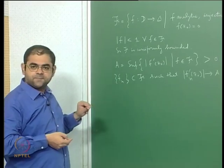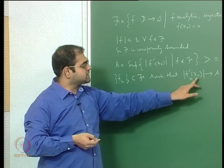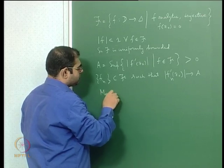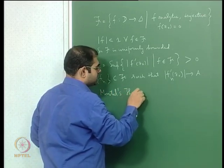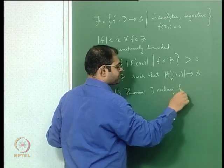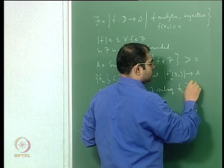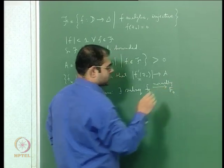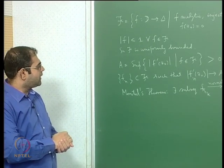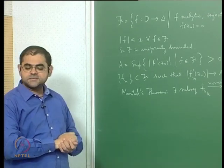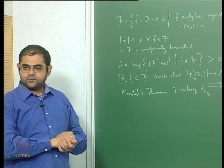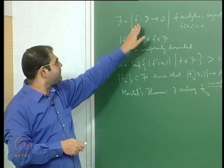We pick a sequence {fₙ} in the family F such that |fₙ'(z₀)| converges to a. This is possible because a is a supremum and can be approximated by a sequence from that set. By Montel's theorem, there exists a subsequence fₙₖ which converges normally — uniformly on compact subsets of D — to a limit function f₀.